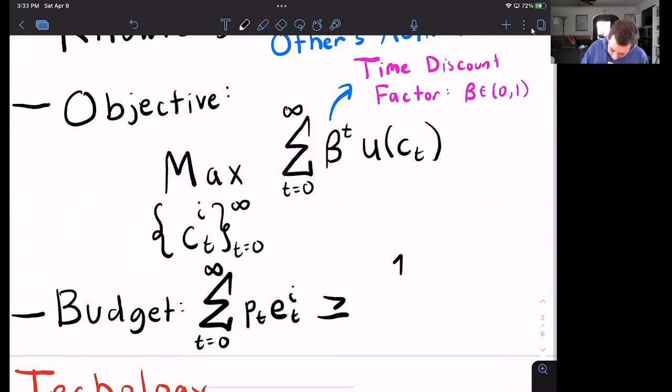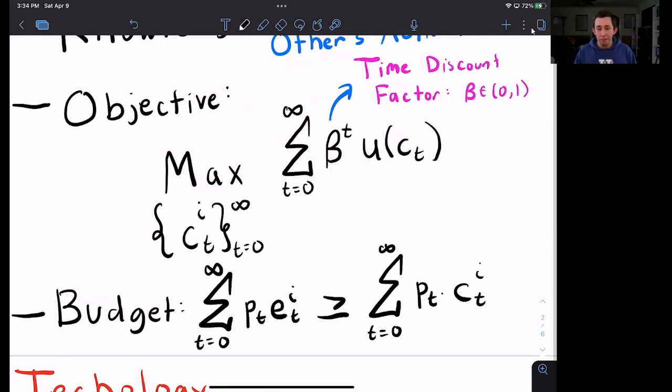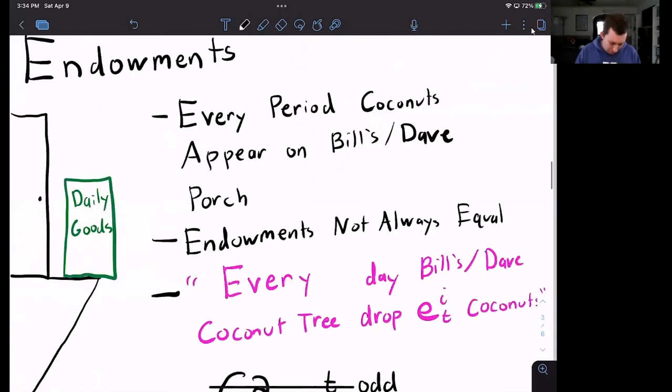What am I spending? Again, it's an infinite sum. It's going to be price times quantity. But now it is the same price times how many coconuts I actually eat in that period. So this is my overall budget constraint. And now we have all the pieces we need to put this together and form an Arrow-Debreu equilibrium formally.